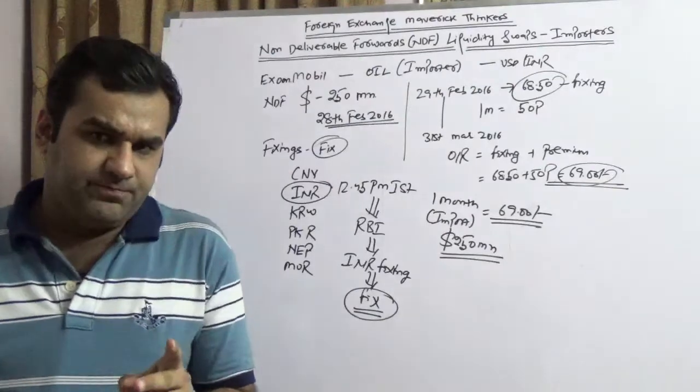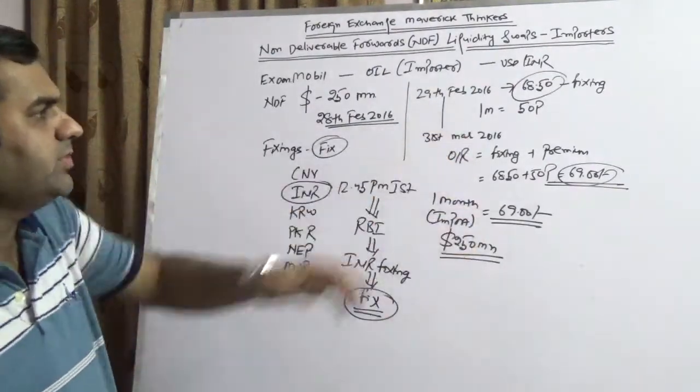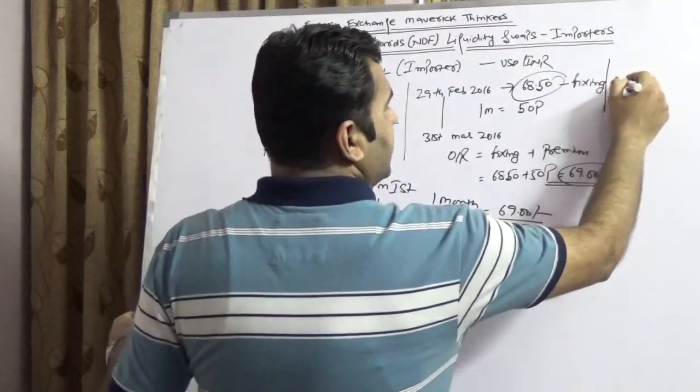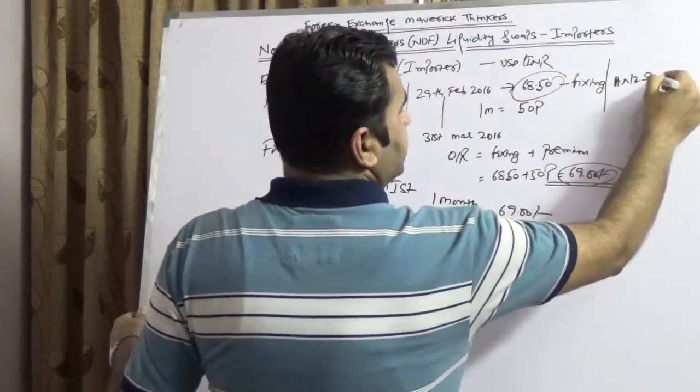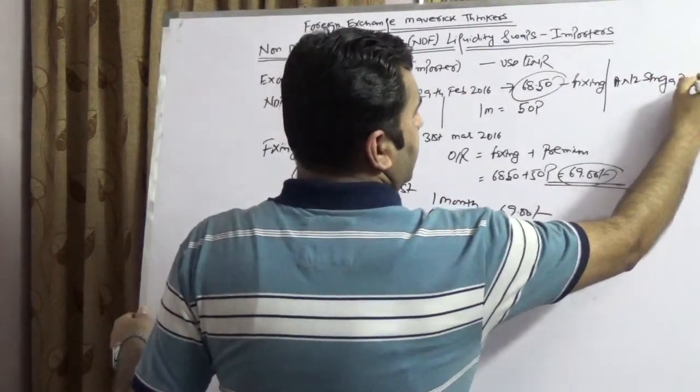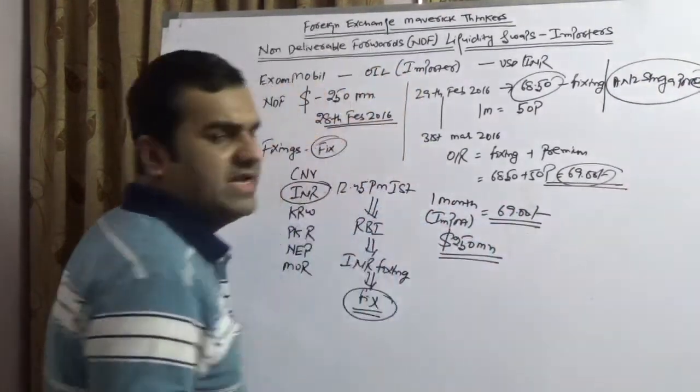Secondly, no Indian bank can give NDF. So here we are assuming that they are done with ANZ Singapore. ANZ means Australia New Zealand Bank, ANZ Singapore. ANZ India cannot give NDF.